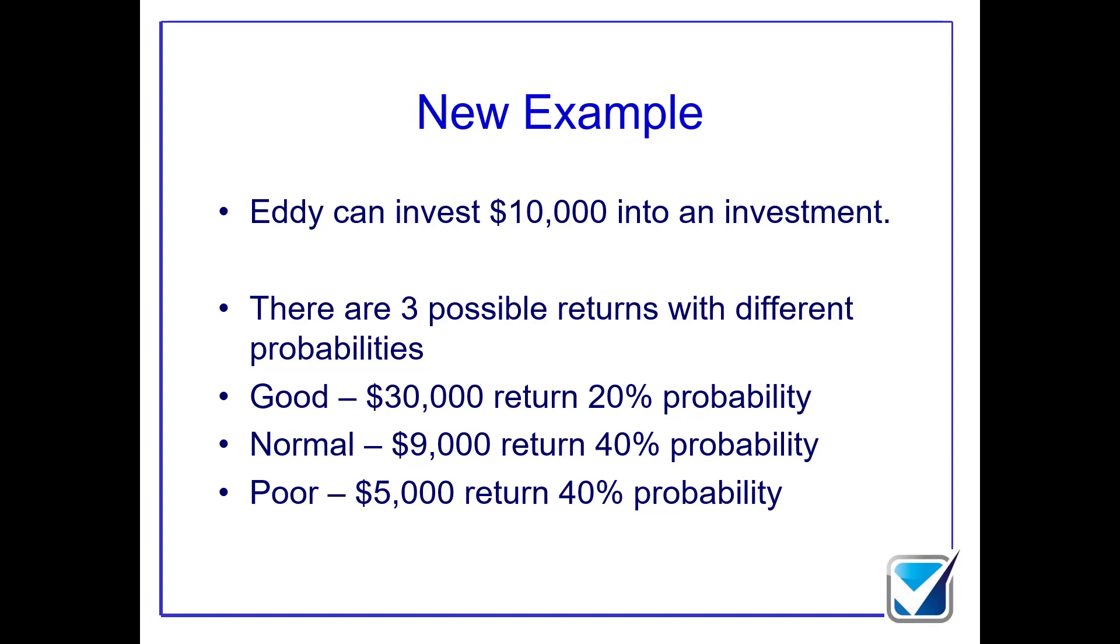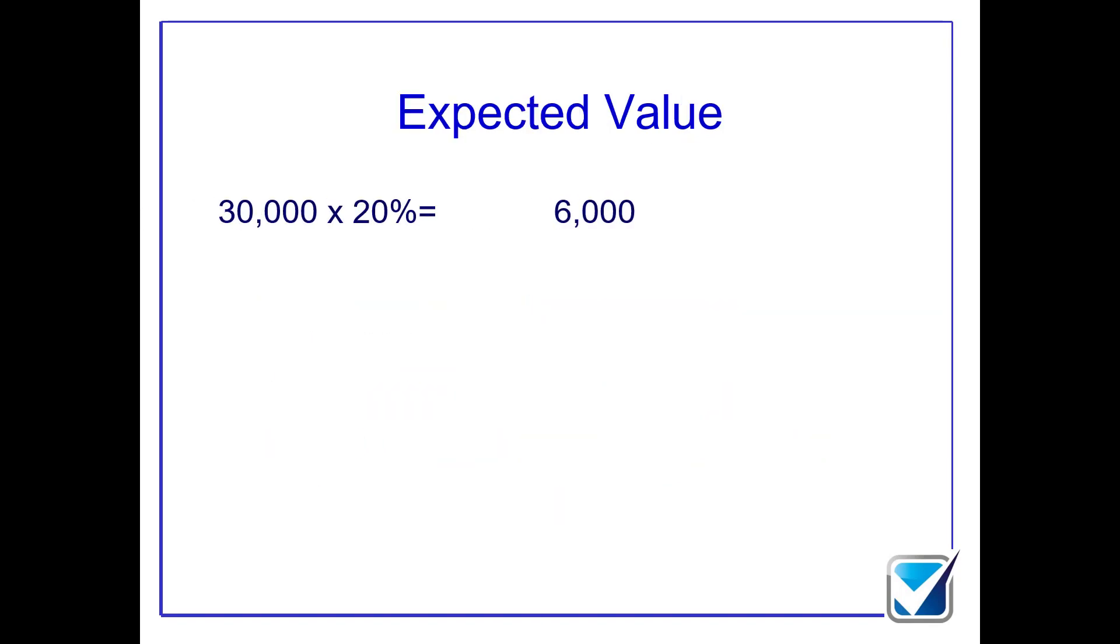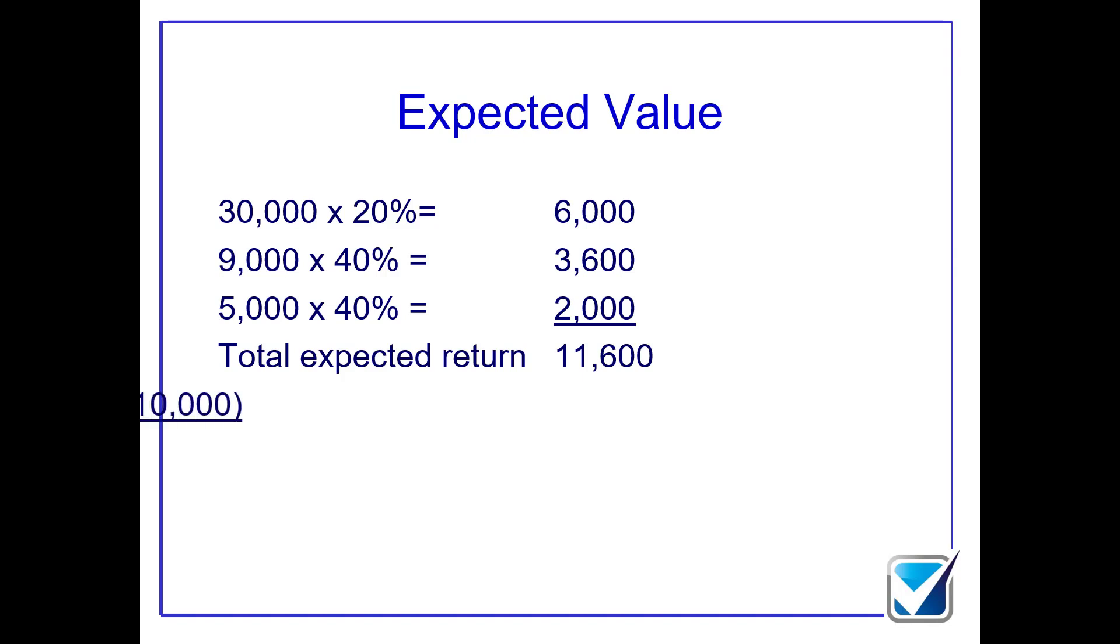When I crunch my numbers to work out expected value, I come up with 20% multiplied by 30,000, 40% by 9,000, 40% by 5,000. That means my total expected return is $11,600. Deduct my initial investment of $10,000, happy days, I still make a profit.